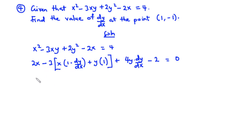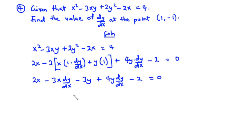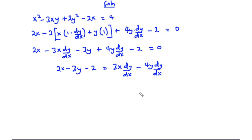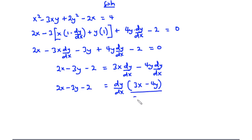Multiplying negative 3 across and expanding: 2x minus 3x dy/dx minus 3y plus 4y dy/dx minus 2 equals 0. Grouping terms containing dy/dx on the right hand side: 2x minus 3y minus 2 equals 3x dy/dx minus 4y dy/dx. Factoring out dy/dx: 2x minus 3y minus 2 equals dy/dx times (3x minus 4y). Dividing through by 3x minus 4y, dy/dx equals 2x minus 3y minus 2 over 3x minus 4y.